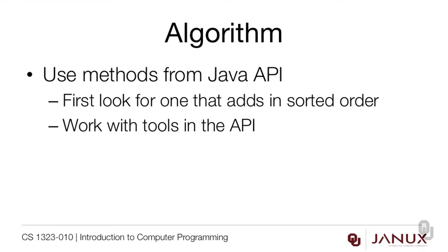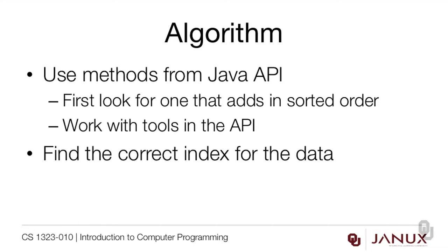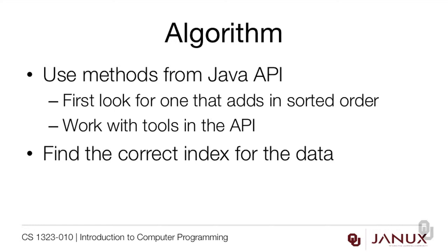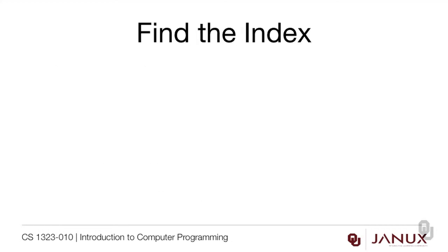So what we have to do is work with the tools that are in the API. That first add command isn't going to help us because that's just putting things at the end of the list - unless our data happens to magically always be in sorted order. So that second add method, the one with the index in it, that has to be the one we want to use. What we're going to need to do is find the correct index for the data and then insert a new element at that index. We need to make sure that the method shifts data aside - and we just read the Java API to know that it does. So then the question becomes: how do we find the index?